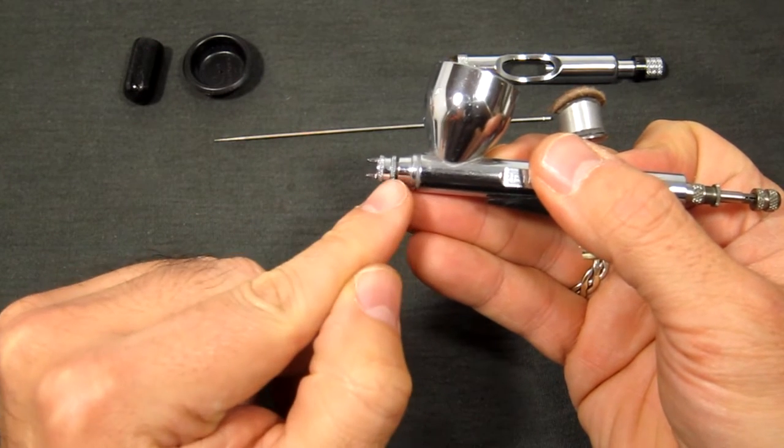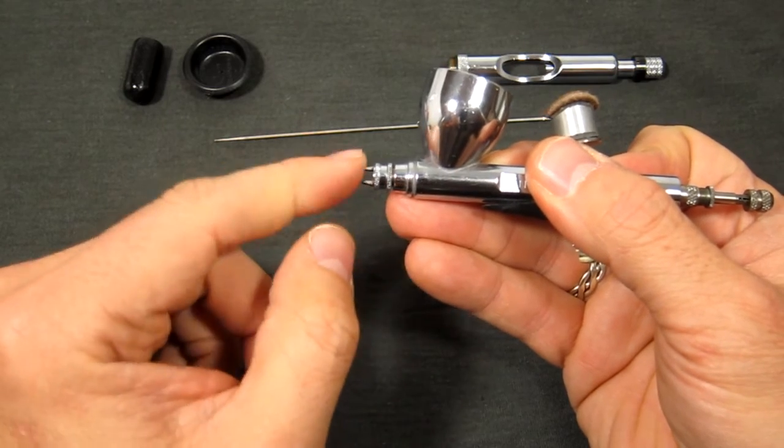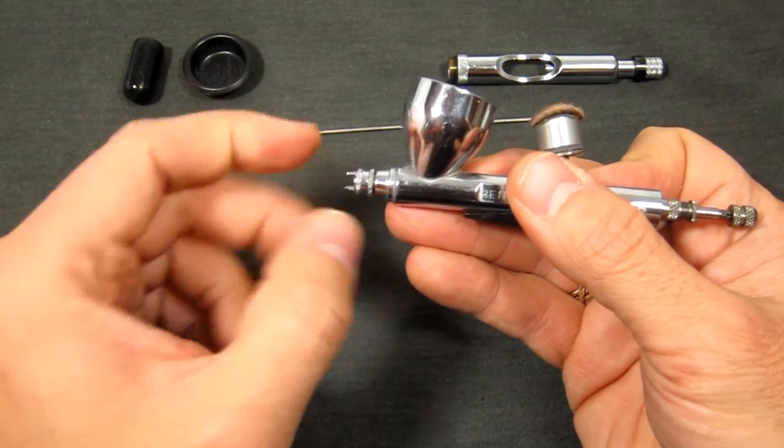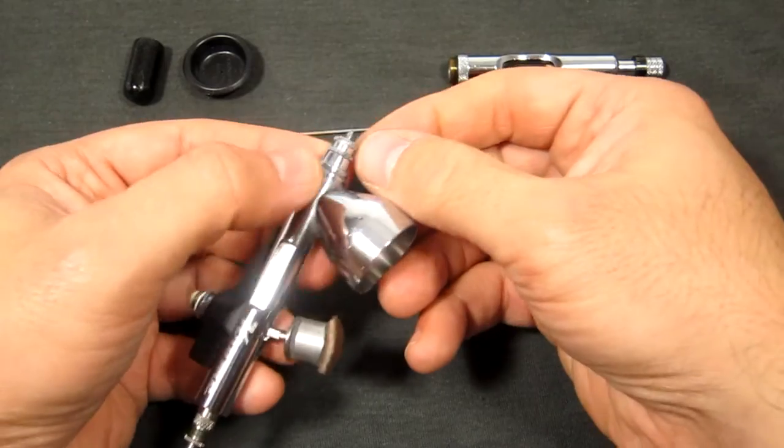So basically I normally take off these two pieces—because these are two separate pieces, the prongs and the nozzle retainer—I normally take them off as one piece because I found that paint doesn't really collect between the two pieces. But for the purposes of this video I'm going to try and take off just the tip first.